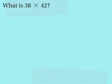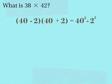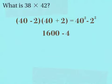This next example asks: what is 38 times 42? I'll use the product of a sum and a difference. I can rewrite 38 as 40 minus 2, and 42 as 40 plus 2. So I have 40 minus 2 times 40 plus 2 — the product of a sum and difference of the same two terms, 40 and 2. Using the special case, that's 40 squared minus 2 squared. 40 squared is 1,600, and 2 squared is 4. 1,600 minus 4 is 1,596.